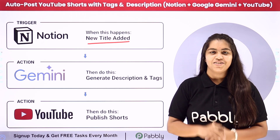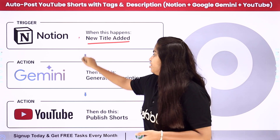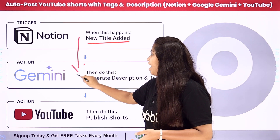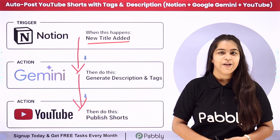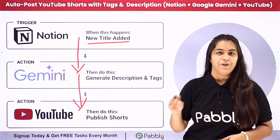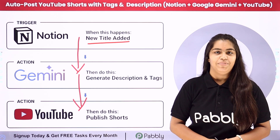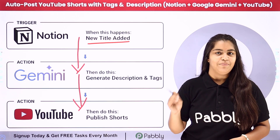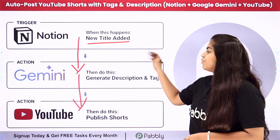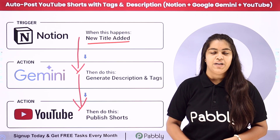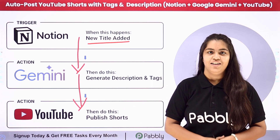To do this, we are going to create a connection between Notion, Google Gemini and YouTube. To create this connection without knowing any programming or coding language, we are going to use Pabbly Connect. It is an amazing automation software. I am going to create this connection because I want to maintain the consistency of my channel.